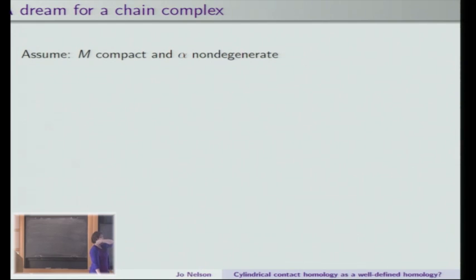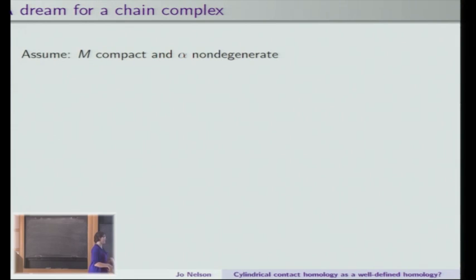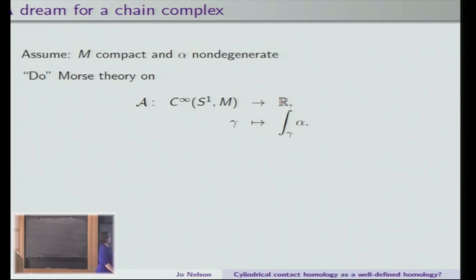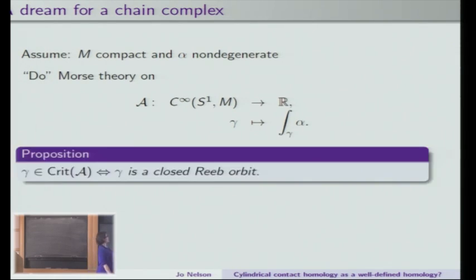Now I want to tell you a little bit about contact homology and what the dream for the chain complex is. We start by assuming that M is a compact manifold and alpha is non-degenerate. The non-degeneracy condition ensures that all of our Reeb orbits are isolated — the periodic ones are isolated. In more words: if you linearize the flow of the Reeb vector field along an orbit, restrict it to the contact distribution, and look at what happens after time T, you get some symplectic matrix, and you don't want 1 as an eigenvalue; then you'll know the flow is non-degenerate.